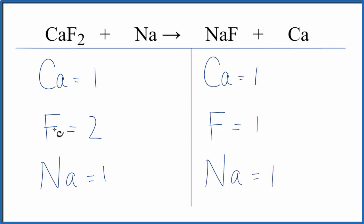So everything's balanced except the fluorines. So to fix the fluorines, we can change the coefficient in front of the NaF. This two will apply to everything. So we have one fluorine times two. That's two. So those are balanced,